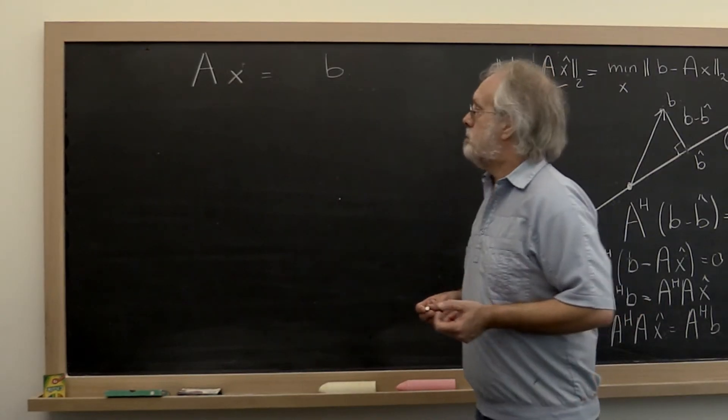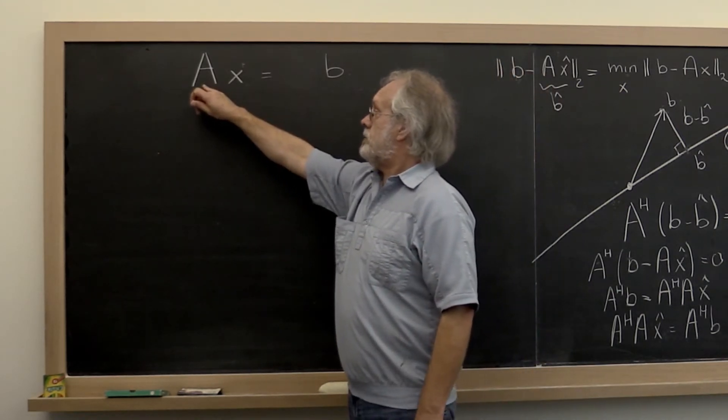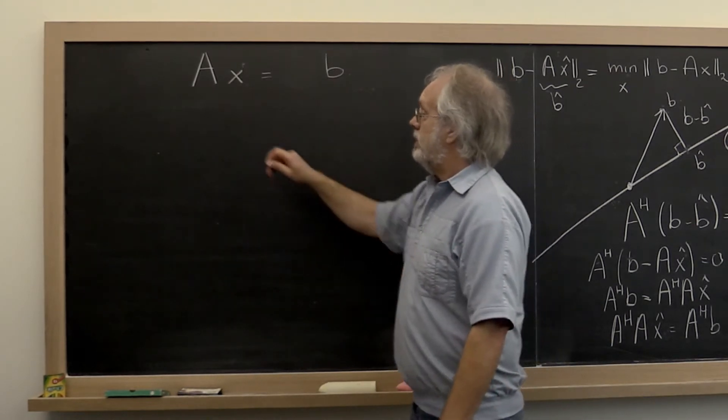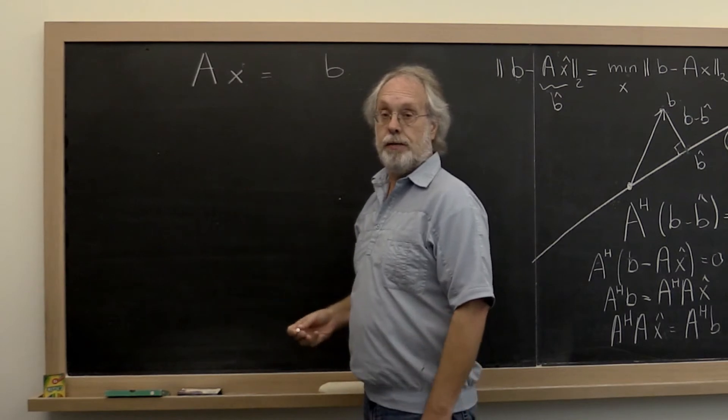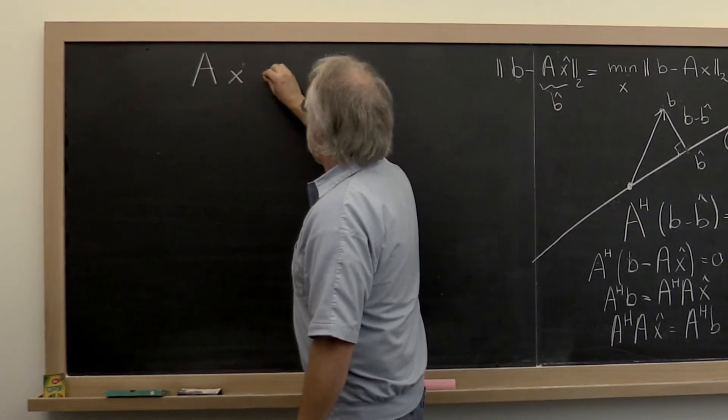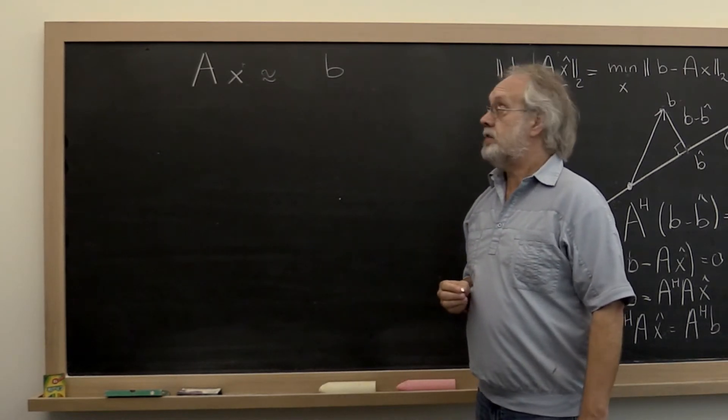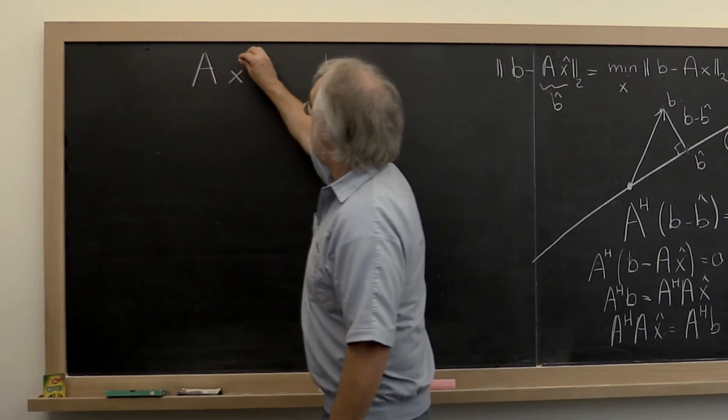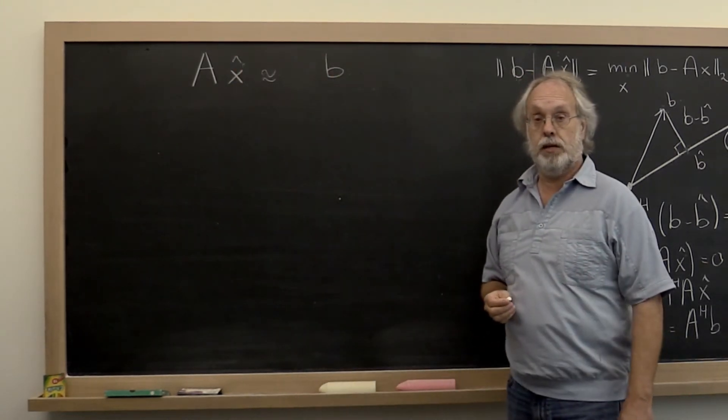Let's review how we got to this point. We wanted to solve a linear system AX equals B. But if A is overdetermined, if A has more rows than columns in it, then usually the best we can do is find the approximate solution AX approximately equal to B. And what we're interested in is the best solution for this.